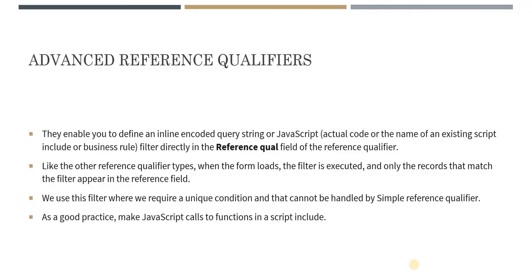Next is the advanced reference qualifier. This enables you to define an inline encoded query, JavaScript, script includes, or even business rules. Like other reference qualifiers, when the form loads these filters are executed and bring the records which match the filter. Use this when you require a unique condition that cannot be handled by a simple reference qualifier — you should always try simple first, then come to advanced. As a good practice, make JavaScript calls to functions in a script include.